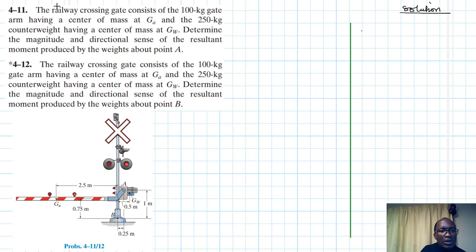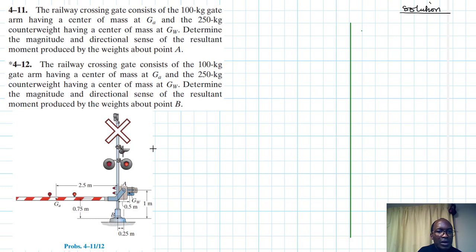Let's start with case number one. We have a rail line crossing with these weights and we have been given two centers of gravity: GA and GW. We have been asked to find the moments produced by the weights about point A in the first case, and in the other case, about point B.